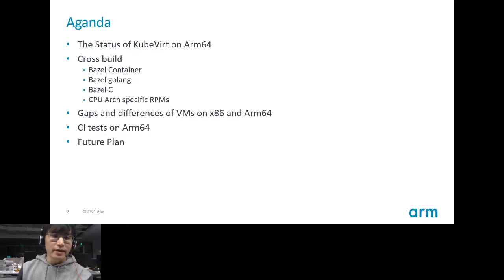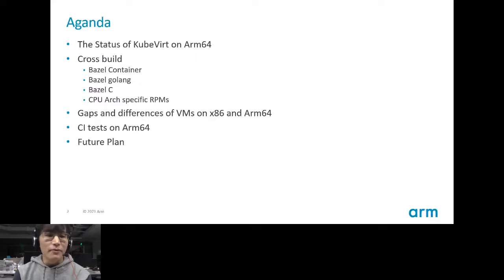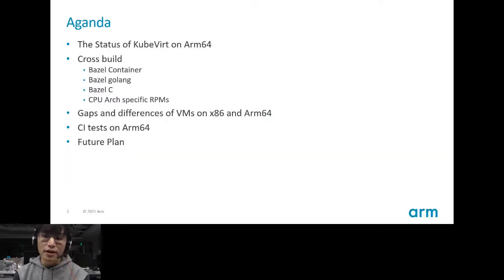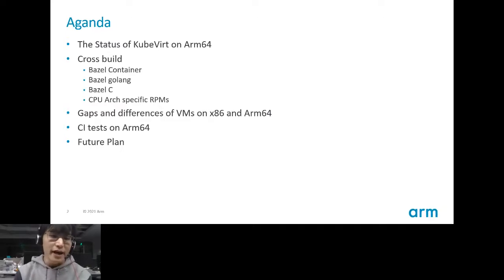Here is the agenda. I will talk about the status of KubeVirt on ARM64. Then I will give you an introduction on cross-build, because we spent so much time on it. This part would be helpful if you would like to do Bazel build for multi-arch. There are four subtitles: a step-by-step process to cross-compile container images for KubeVirt, then the gaps and differences of VMs on x86 and ARM64, CI testing on ARM64, and future plans.